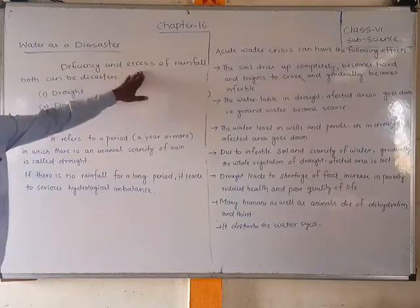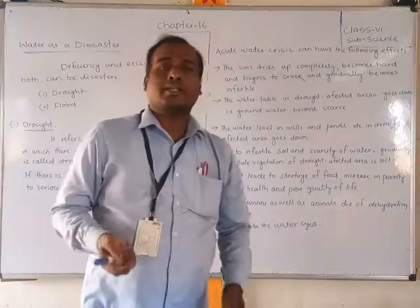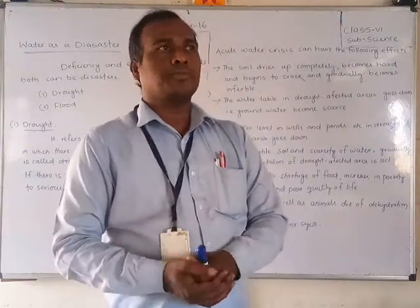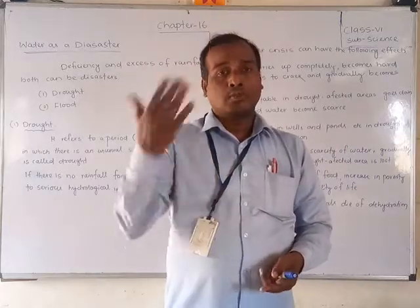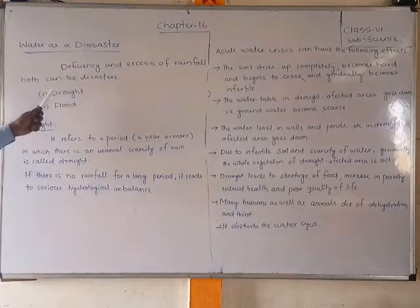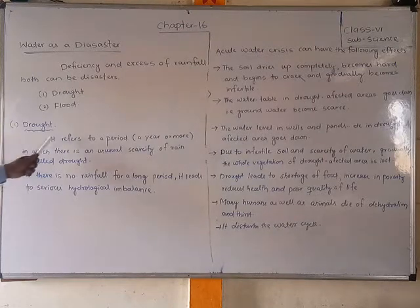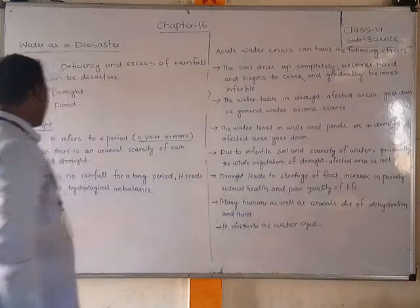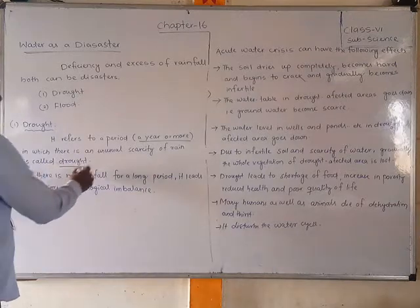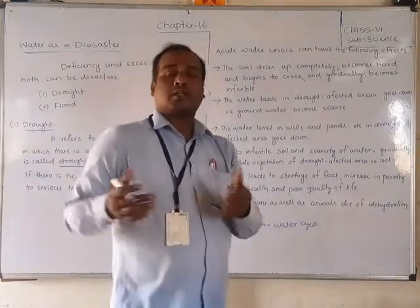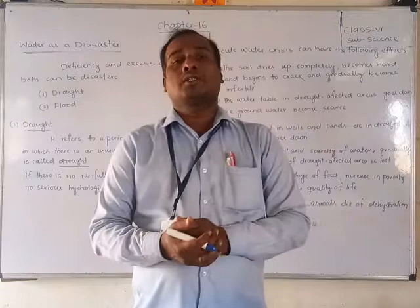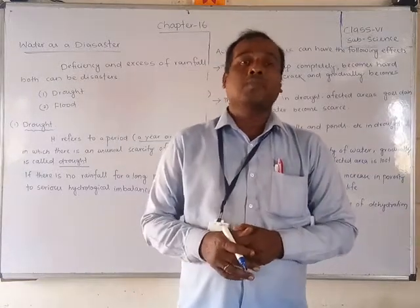We mainly get water from rainwater. If there is no rain, drought will form. If there is more rain, it will lead to floods. So both are disasters — one is drought and another is flood. Drought refers to a period of one year or more in which there is an unusual scarcity of rain. If you do not get rain for one, two, or four years totally, that will be declared as a drought.